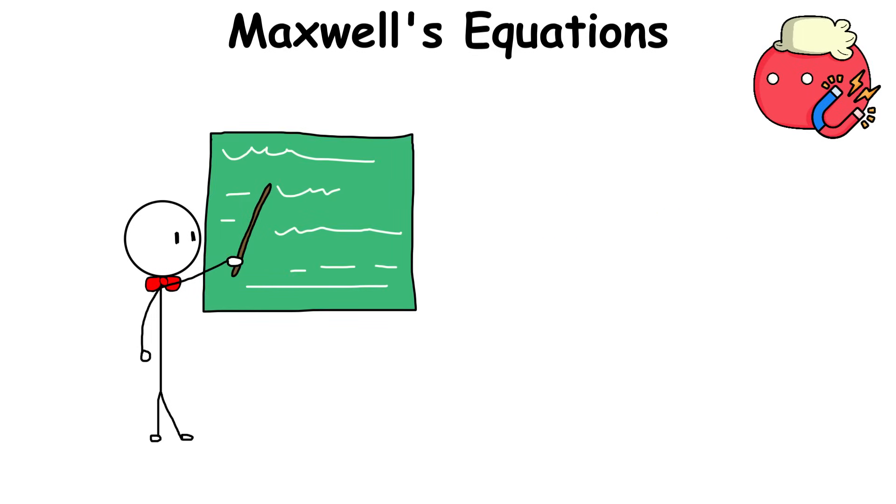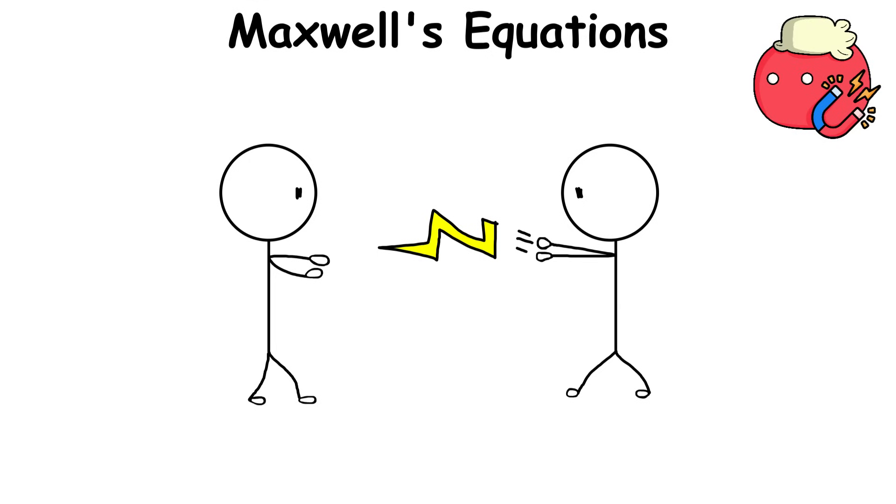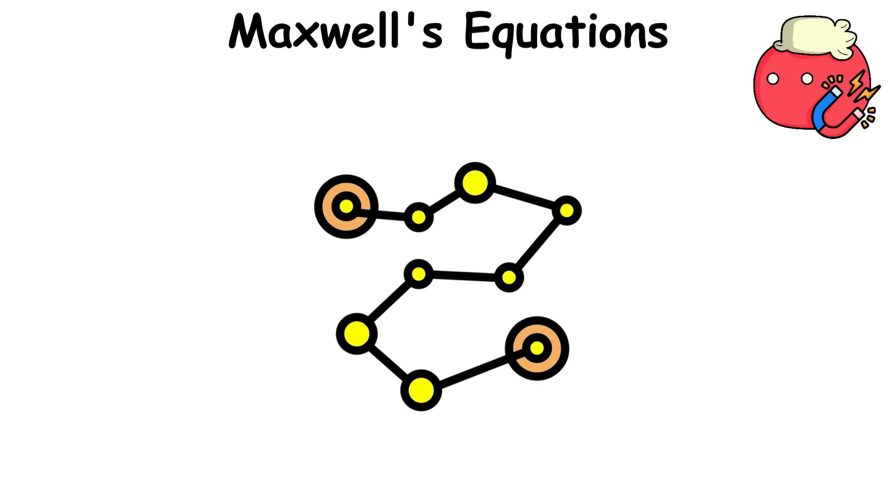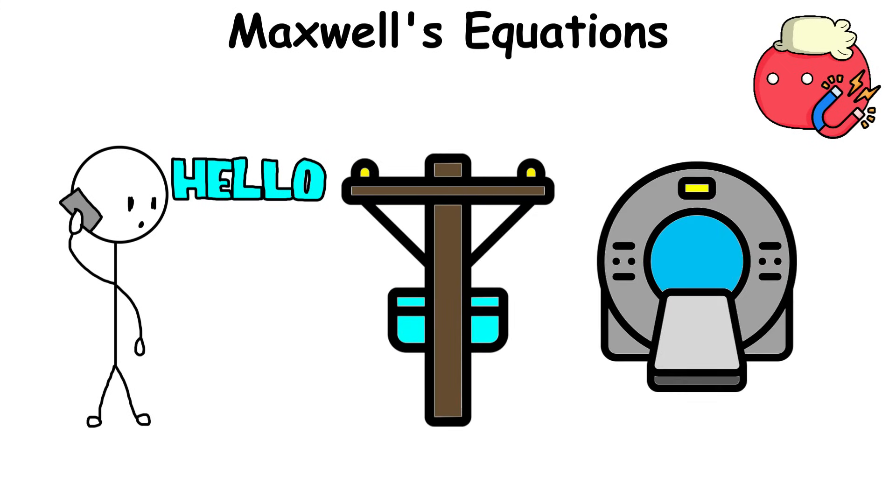Ultimately, these concepts allow us to understand how electricity and magnetism work with one another and how they are interrelated in many different fields and technologies, such as communication devices, power grids, and even MRI machines.